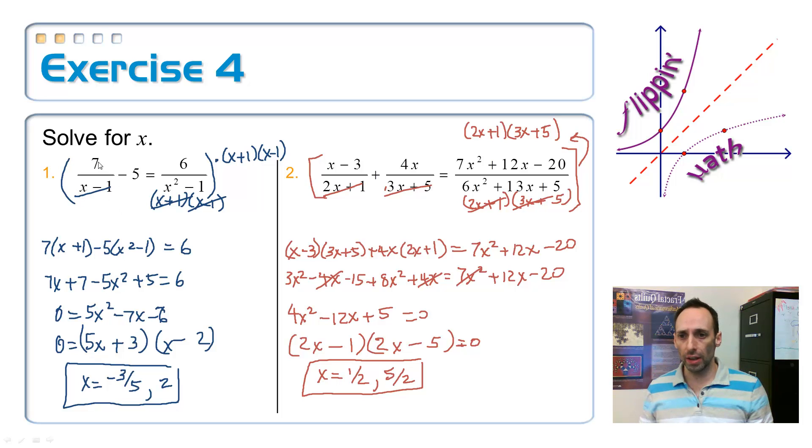This one cancels out, leaving you with 7 times x plus 1. Negative 5, nothing cancels out. Both of these will cancel out, leaving you with just 6. I get quadratic after I simplify it, factor the quadratic, and there's my two answers. Would either one of those answers make the denominator equal to 0? The only thing that would make the denominator equal to 0 is plus or minus 1, and that's not going to happen.